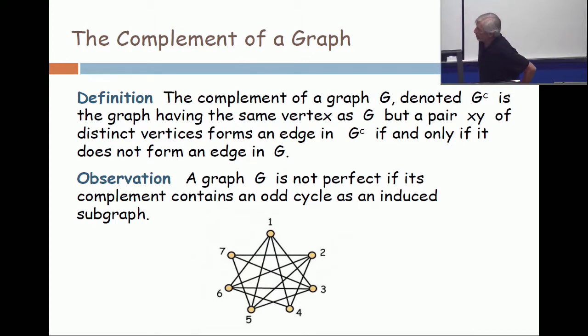For example, three, five, seven is a triangle. Agreed? So the maximum clique size is at least three.